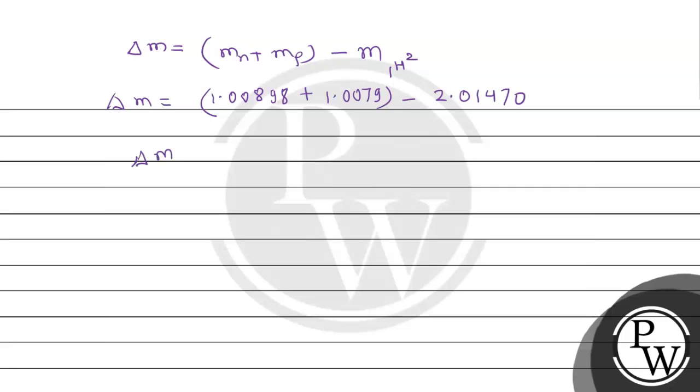When you calculate the final value of del M, you will get 0.00187 atomic mass unit.